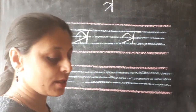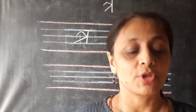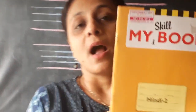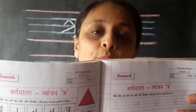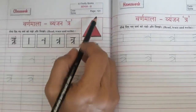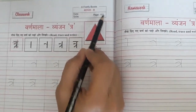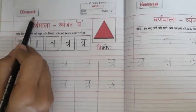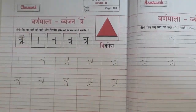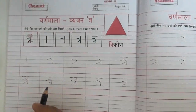You can write in your notebook also. Now children, we are going to write letter Tra in our Hindi MySkillbook. We are going to open page number 101 and 102. Here on page number 101 and 102, we are going to write the date on the top most left corner under classwork.